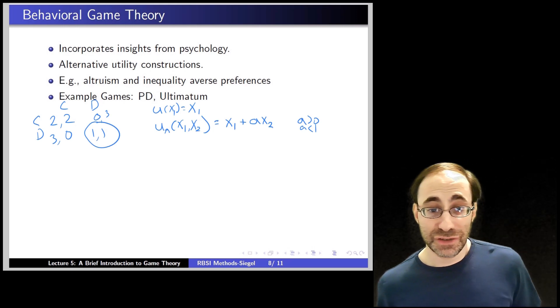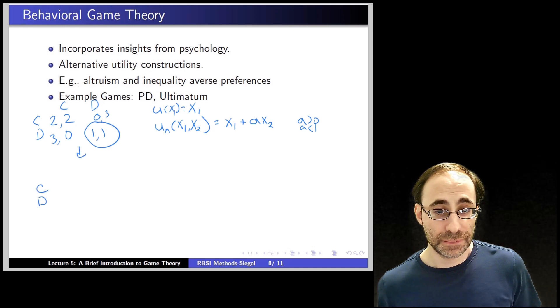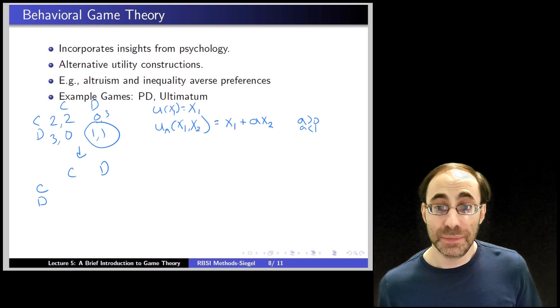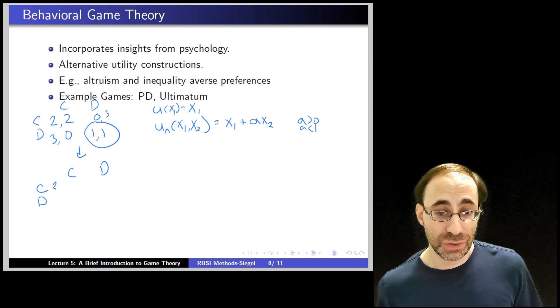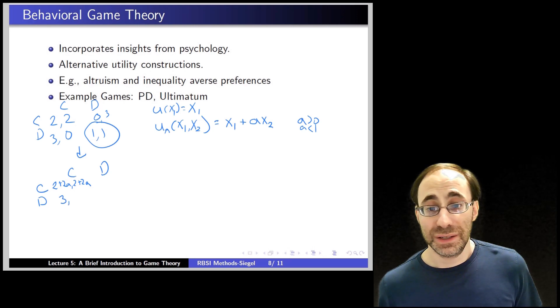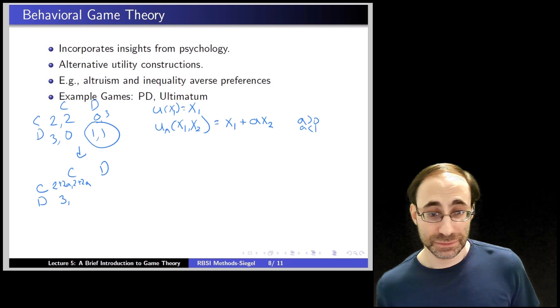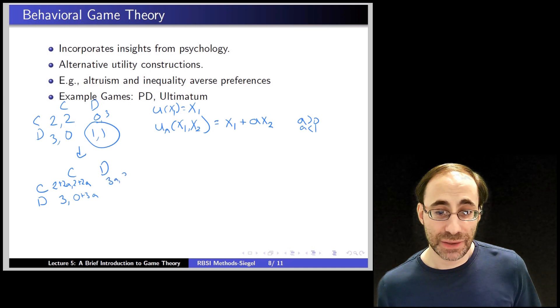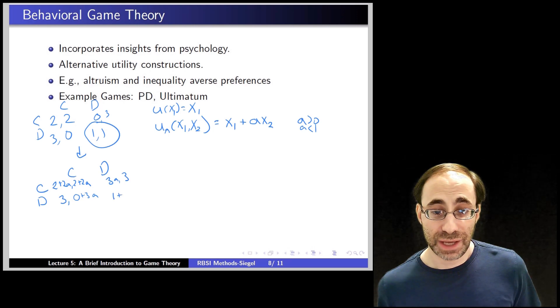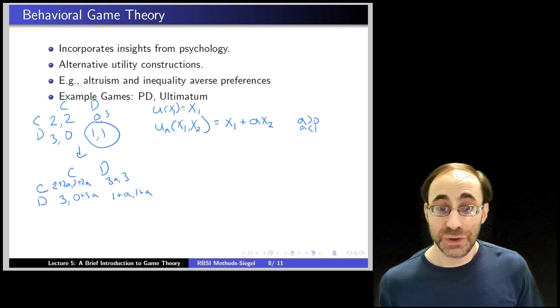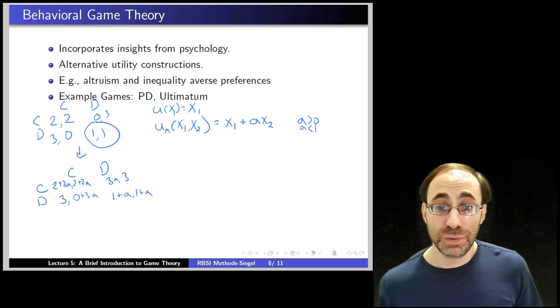We can go through and change utilities from these payoffs. The 2 now becomes 2 plus a times your opponent's 2, so we have 2 plus 2a for both actors. If you defect, you're getting 3 plus 0 times a, and they get 3a. And with mutual defection, we have 1 plus a for each player. Now we're not comparing 2 to 3, which showed that defection was always a dominant strategy. Instead, we're comparing 2 plus 2a to 3.